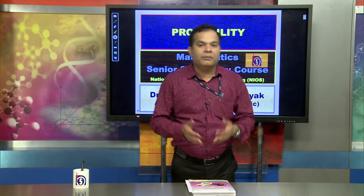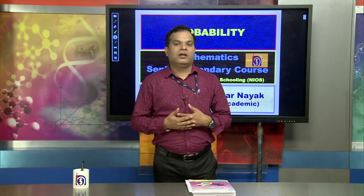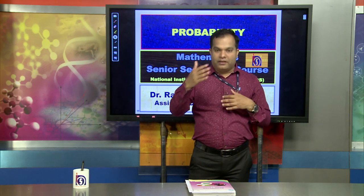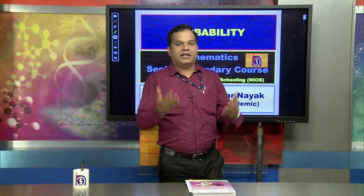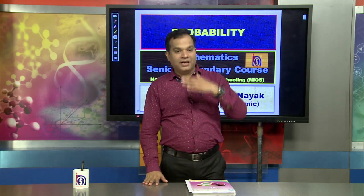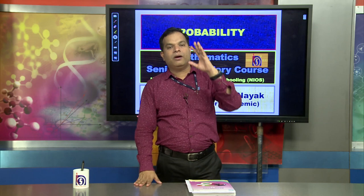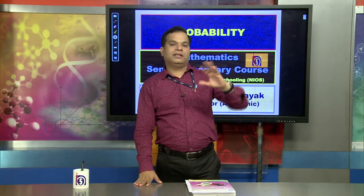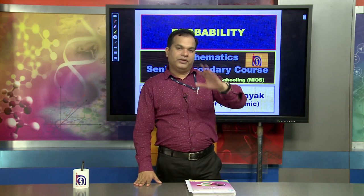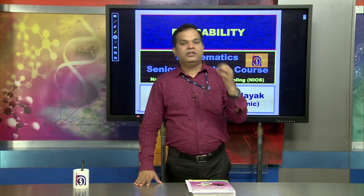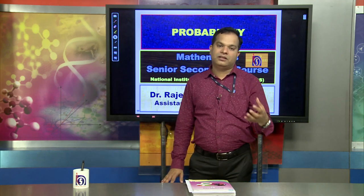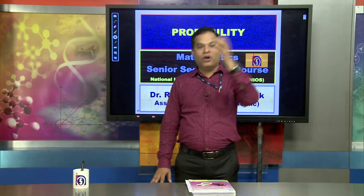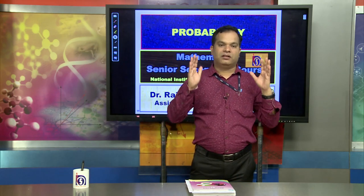In order to measure uncertainty, there is a branch in mathematics known as probability. Probability means chance factor. For example, if I have applied for an interview, I may predict that I could be selected — my chance depends on my performance. So probability is known as the science of uncertainty, or the measure of the chance factor.